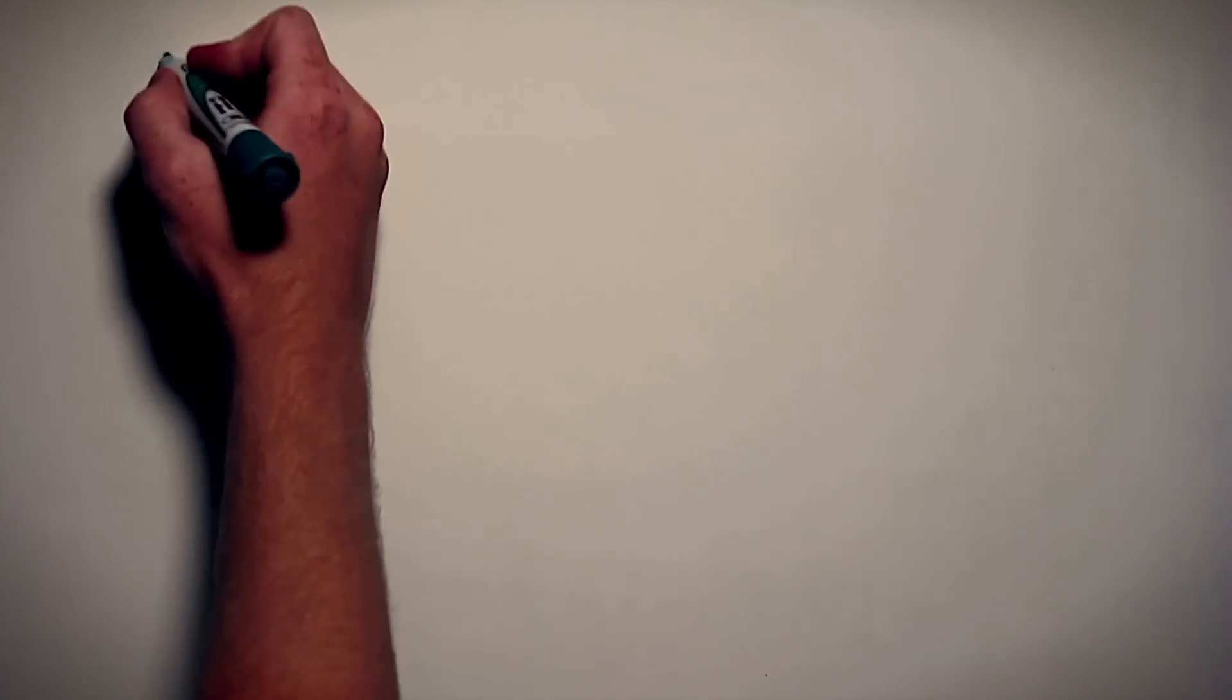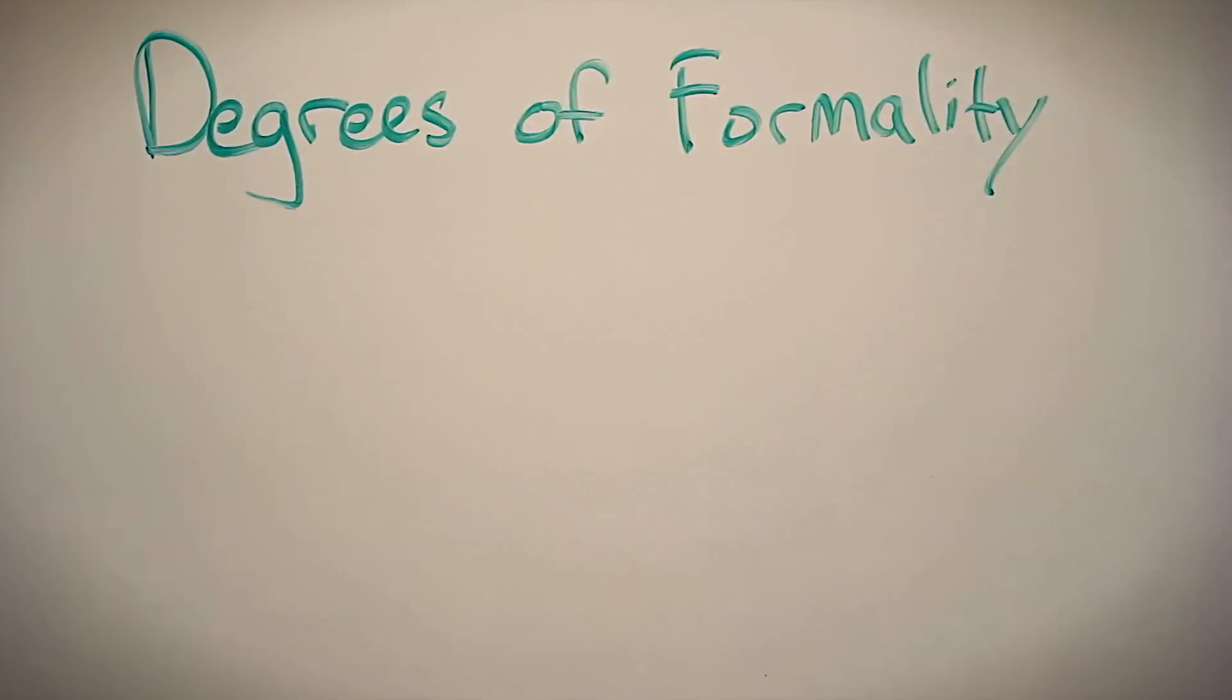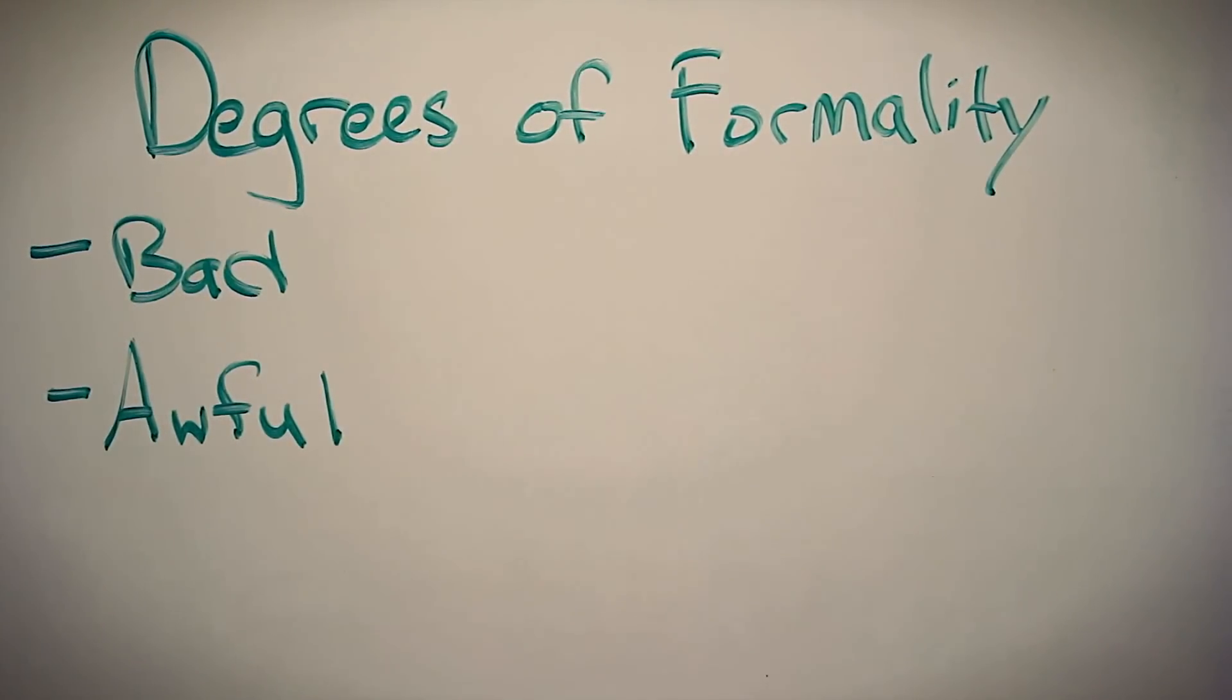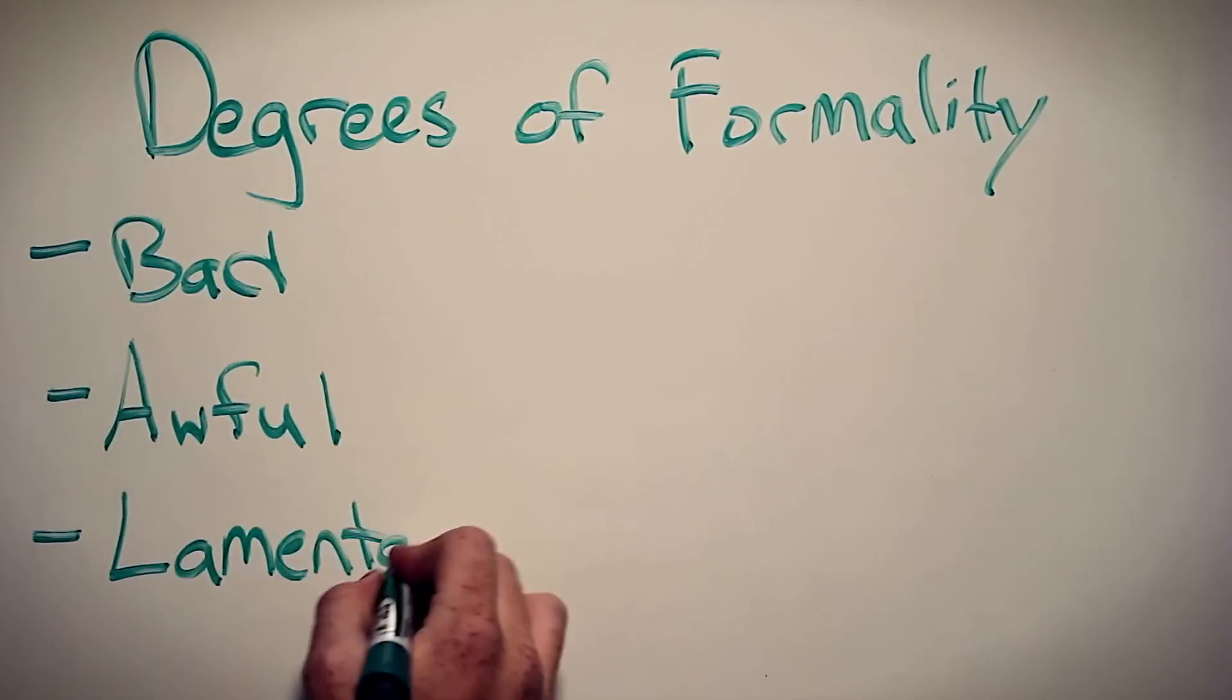Here we're going to take a look at degrees of formality, and specifically the word awful. Degrees of formality is the level to which a word is elaborate. It's probably better for me just to show you what I mean. Let's look at the word awful. This is a fairly common word, but we could be less specific. For instance, we could simply say bad. This is an example of being less formal. On the flip side, we could use the word lamentable and increase our level of formality.